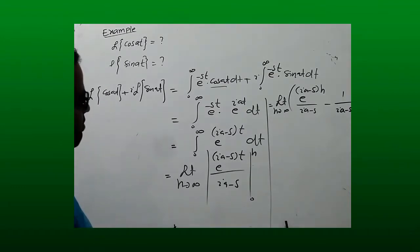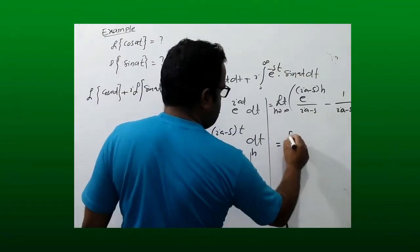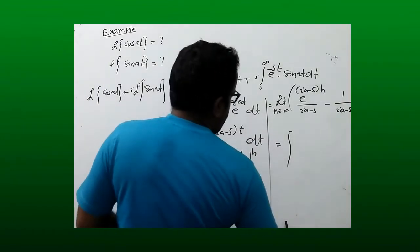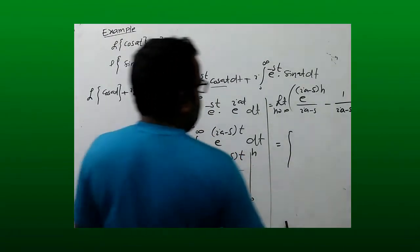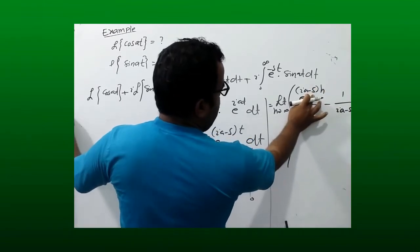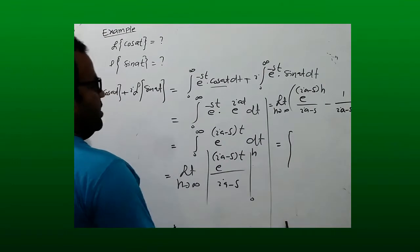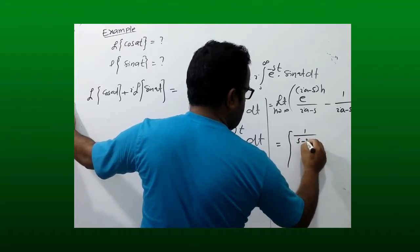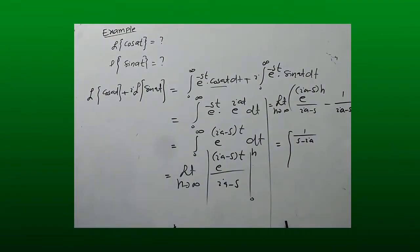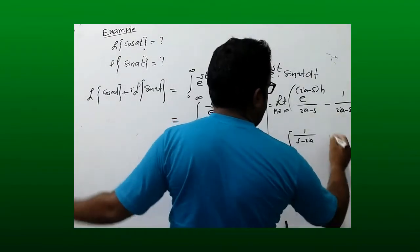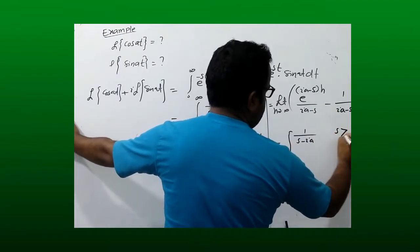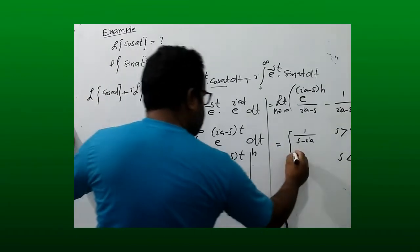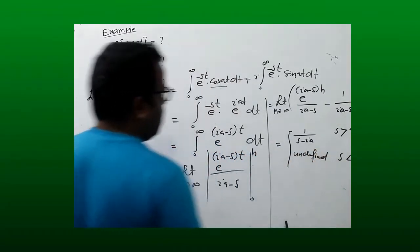When we take the limit as h approaches infinity, there are two cases. If s is greater than a, the answer is 1/(s - ia). If s is less than a, the expression is undefined.